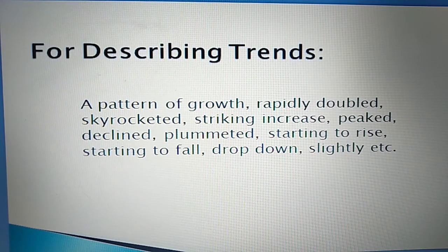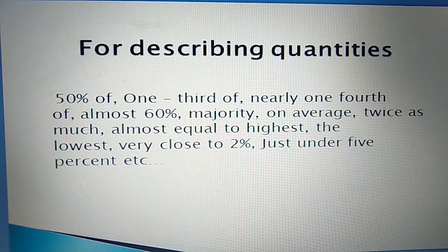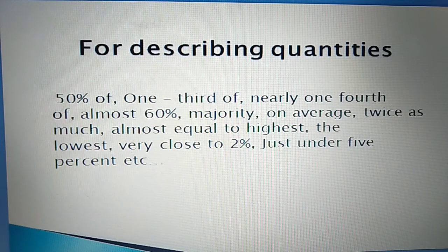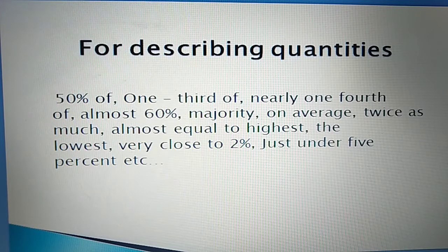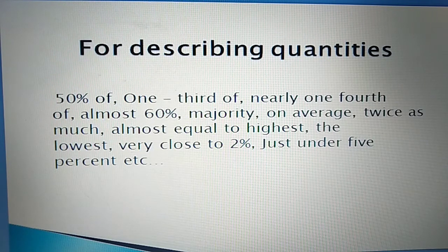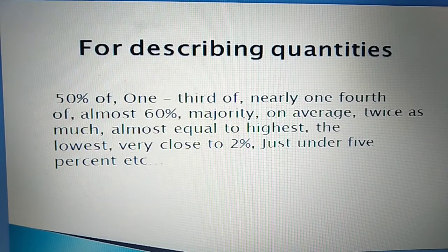If quantities or percentages are given, you can write: '50% of', '1/3 of', 'nearly 1/4 of', 'almost 40%', 'almost 60%', 'majority', 'on an average', 'twice as much'. These are the terms you can use to explain quantities or percentages given in the chart.